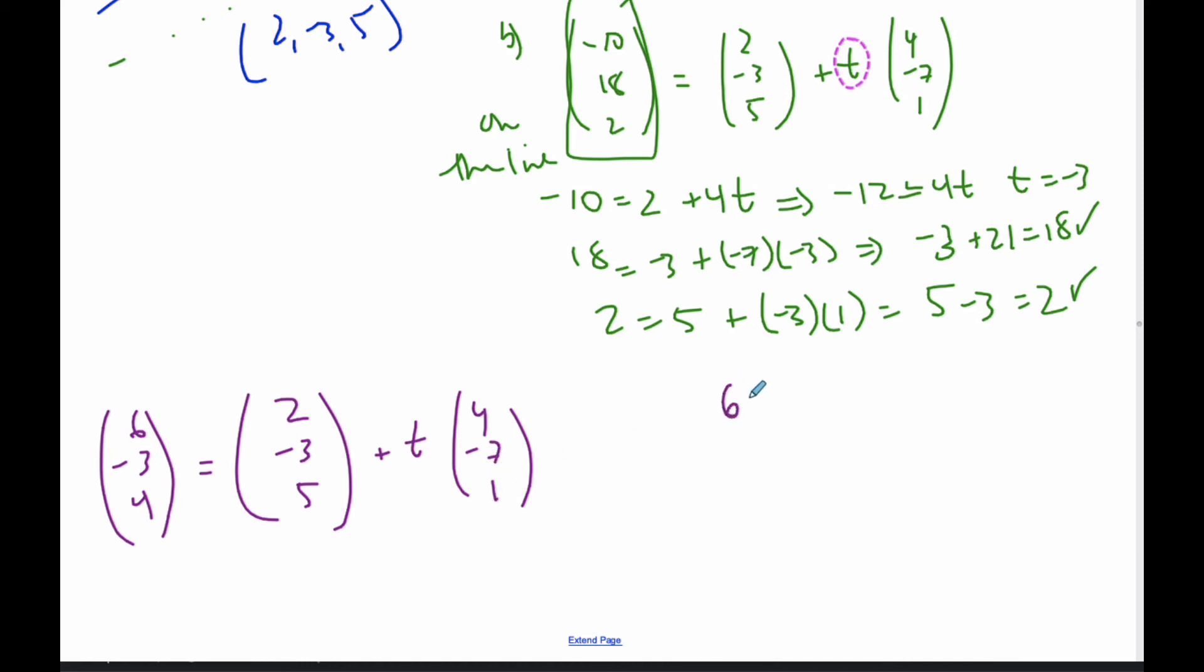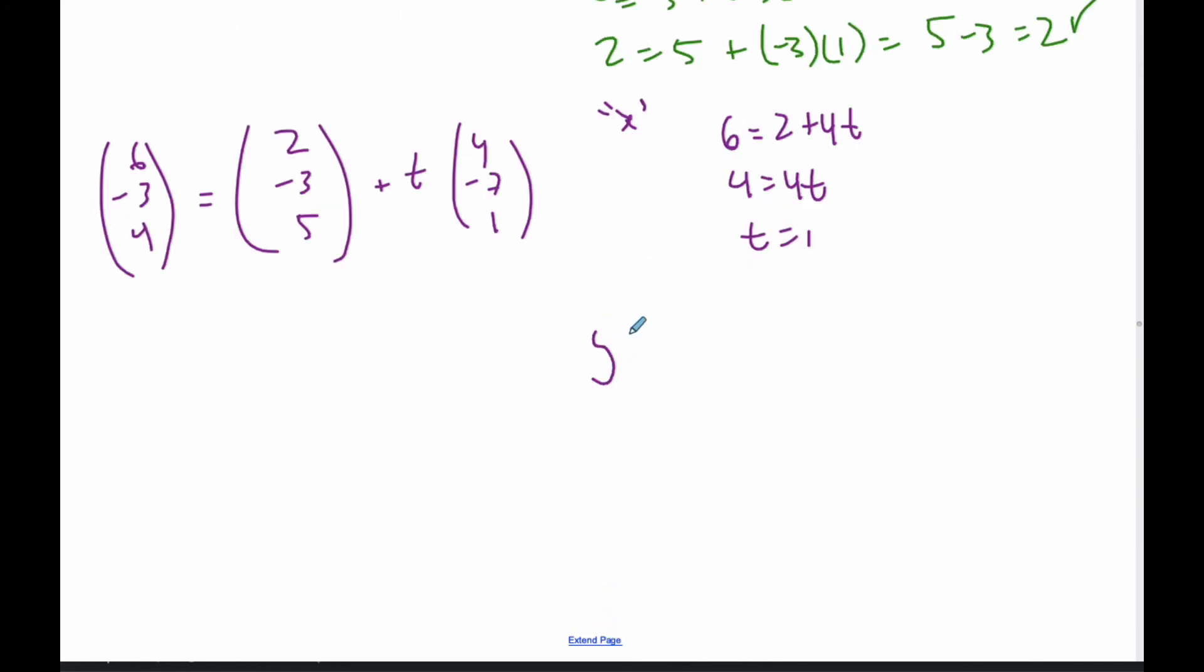For the x value: 6 = 2 + 4t, so 4 = 4t, and t = 1. For the y value: -3 = -3 + (-7)t, so 0 = -7t, and t = 0. Already I can see that they're not the same.